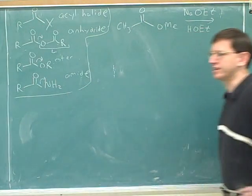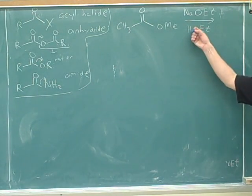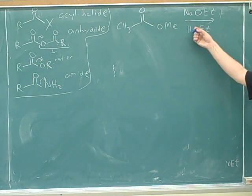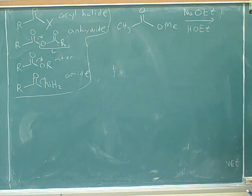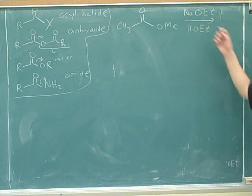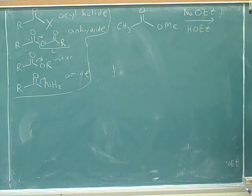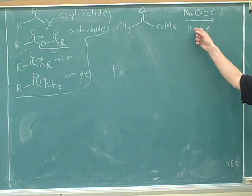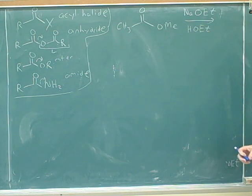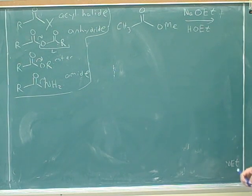Acids tend to protonate things. What type of functional group is this? O-Et — that's ethanol, that's an alcohol. Now, are alcohols acids? Well, they're certainly not strong acids. So there's no particular reason to think that we're going to start with a protonation here. Alcohols don't go around protonating things unless the things are very basic.